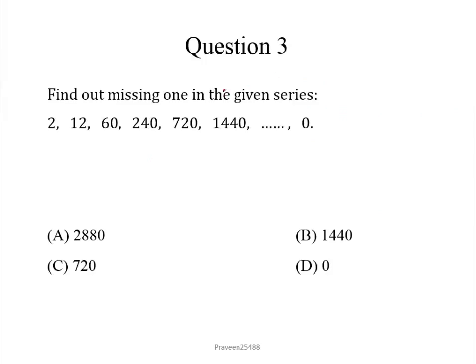Now question number 3. Find out the missing one in the given series: 2, 12, 60, 240, 720, 1440, blank, 0. Here you will see that numbers are rapidly increasing, so there will be definitely multiplication. We have to find the number by which we multiply to get the next number. From the series it is clear that the last number is 0, so the sequence will end up at 0.